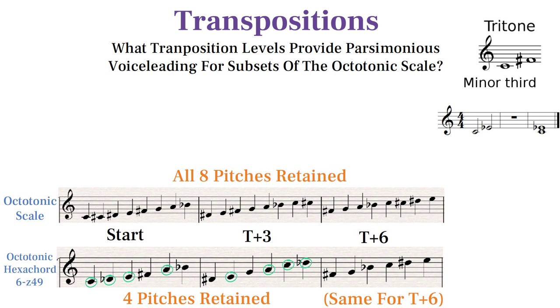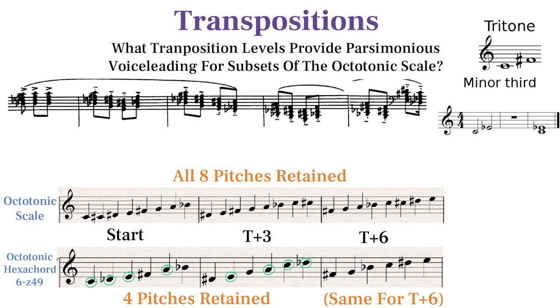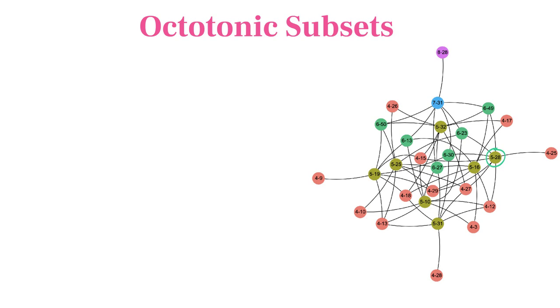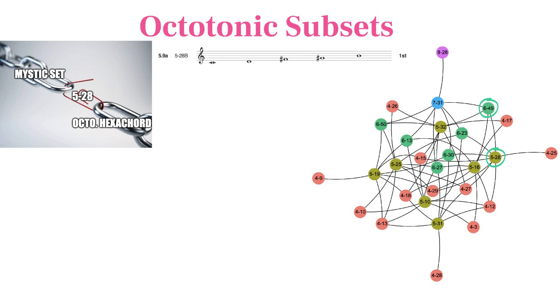Here's a clear example of octatonic chords in Sonata 7 transposing a minor third away. This excerpt uses a four-note octatonic subset that's like a major and minor triad combined. There are many subsets of the octatonic scale that Scriabin uses. Set 528, which we've discussed as a prominent subset of the mystic chord, is also a subset of the octatonic hexachord, making it a linking family member of both prominent supersets. The same goes for the French 6 chord.